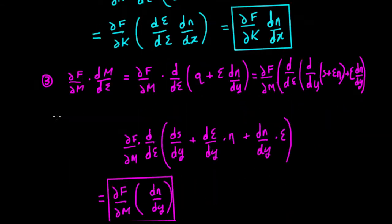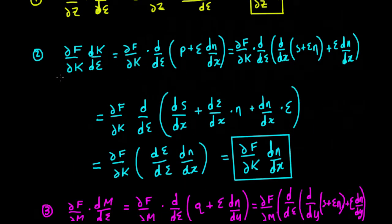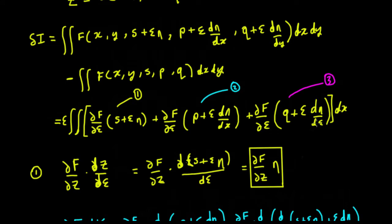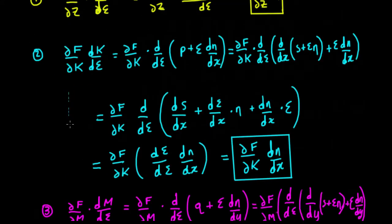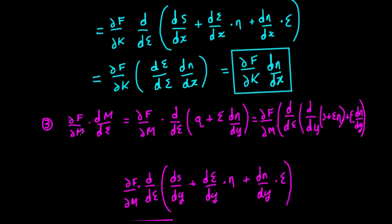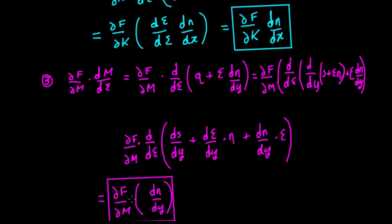It's exactly the same for the third term. The only difference is we've added another dummy variable m for the q term, so we have partial f by partial m times dm/d·epsilon. The process is exactly the same as the one above, except there's a term in y rather than in x. Working through, you're left with partial f by partial m times d·η/dy as opposed to d·η/dx. So those are the three terms.